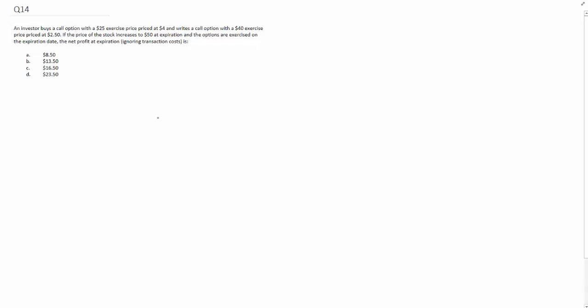Okay, an investor buys a call option with a $25 exercise price priced at $4, and writes a call option with a $40 exercise price priced at $2.50. If the price of the stock increases to $50 at expiration and the options are exercised on the expiration date, the net profit at expiration, ignoring transaction costs, is what?